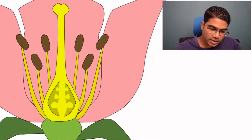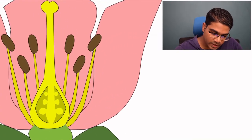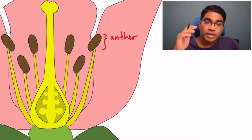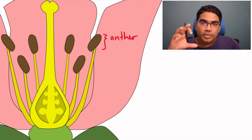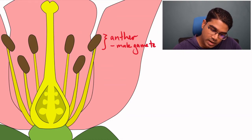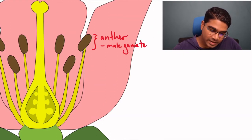First, let's look at the male part. The male part consists of this bean-like structure here at the top. This is known as the anther, and the anther is where the pollen sacs are. Inside the pollen sacs, there are pollen grains. The pollen grains are actually the male gametes. So the pollen grains are contained inside the anther.